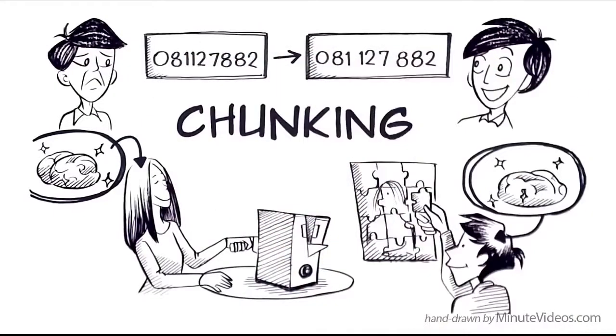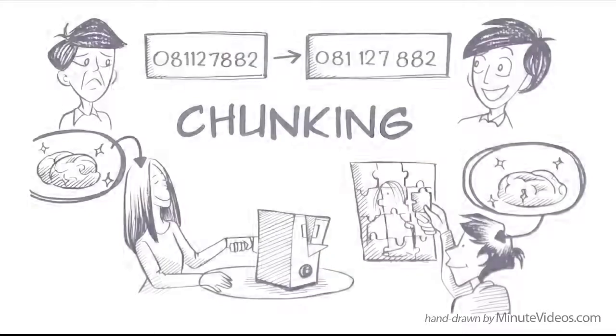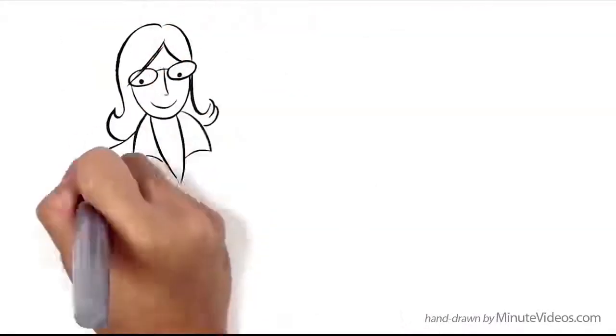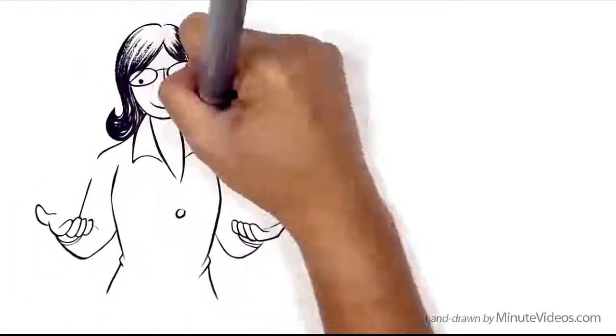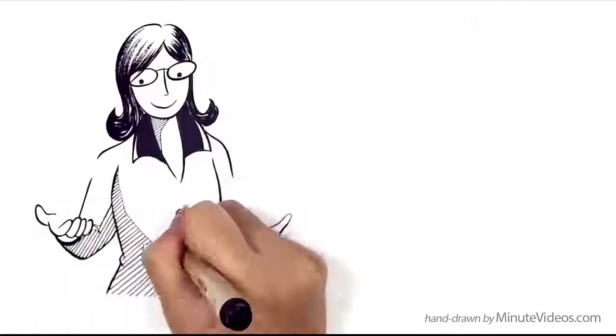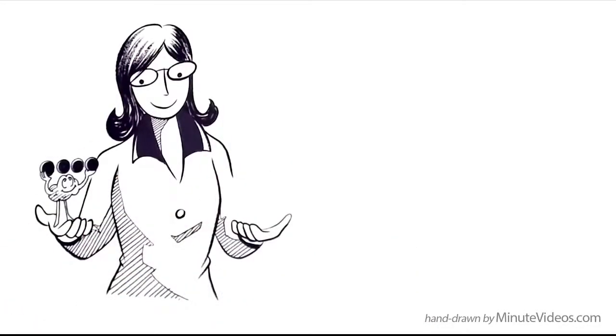This is how it works. Our short-term memory is fast but tiny. According to learning expert Dr. Oakley, it can hold only four chunks of information at once. So when new inputs arrive, it has two ways to pick them up.